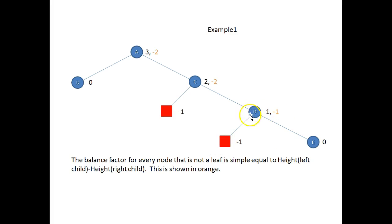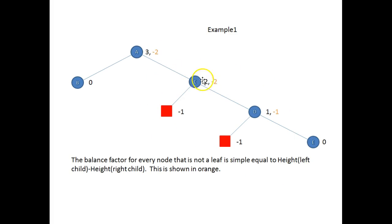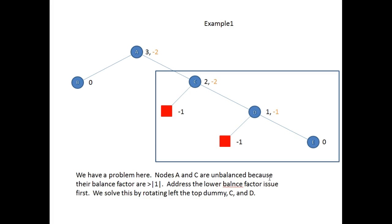Now we calculate the balance factor. Height minus height: minus one minus zero equals minus one. Minus one plus one gives minus two, and zero minus two gives minus two. So there's a problem — this is unbalanced. Nodes A and C are unbalanced in that they have balance factors whose magnitude is greater than one.